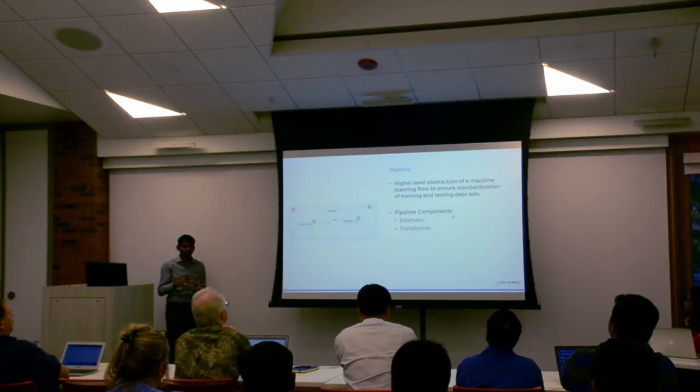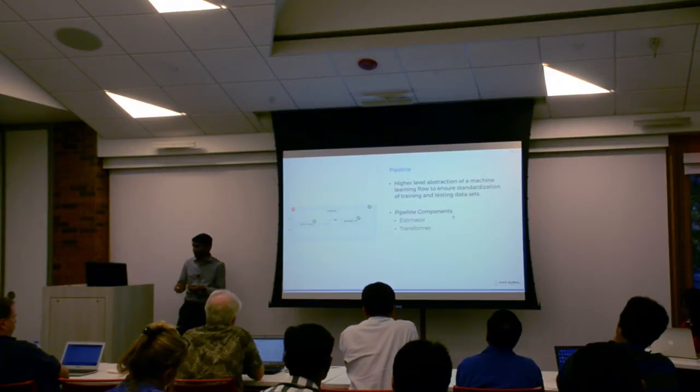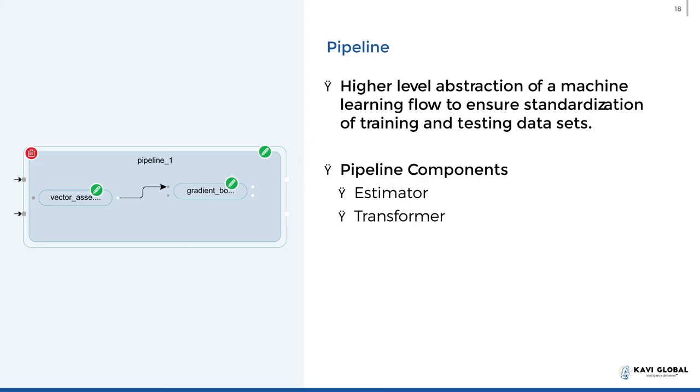We saw a series of data preparation activities which we call feature engineering, and also various models — depending on what the objective is, we can use one or many of those. There is a framework called pipeline provided by Spark, which is of great help to developers. Normally, you have to go through lots of processes to develop a model — first get the attributes, then clean them, merge them — there are a minimum of 8 to 10 steps before you actually develop the final model.